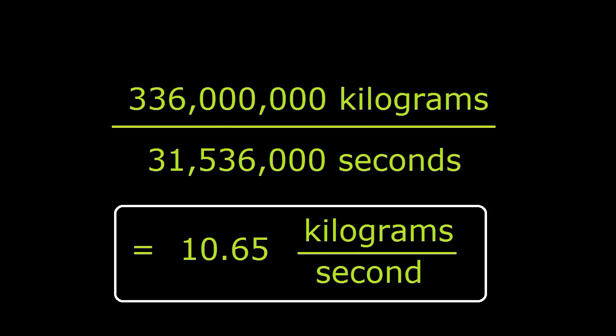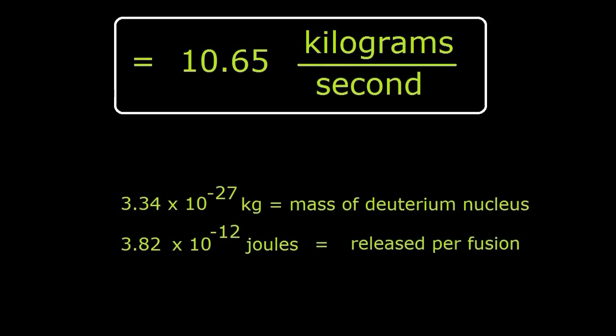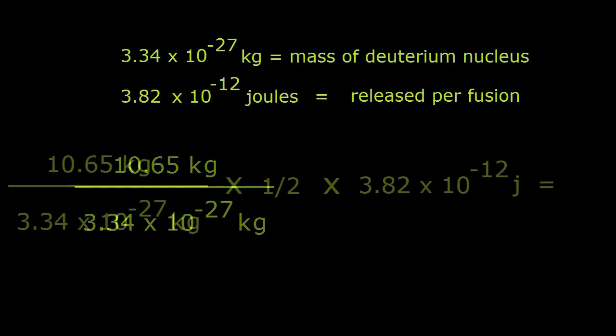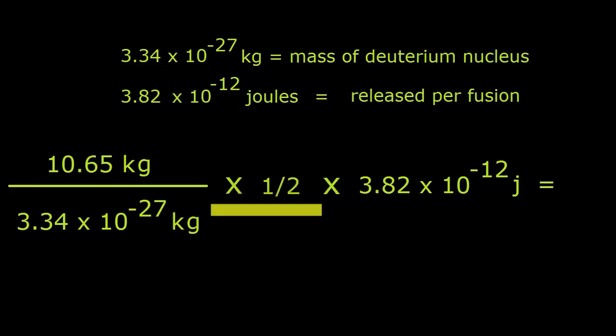Now we can calculate the amount of energy let loose per second. 3.34 times 10 to the negative 27 kilograms is the mass of a deuterium nucleus. 3.82 times 10 to the negative 12 joules is the amount of energy released per fusion. So we divide to get the number of deuterium nuclei, then divide that by 2 to get the number of reactions.